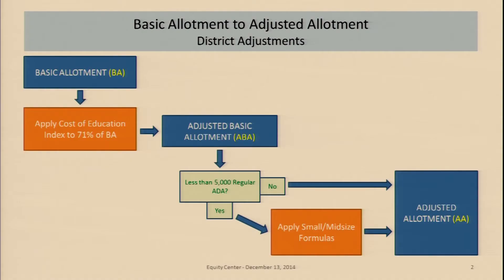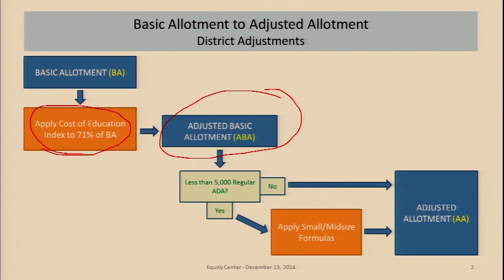Just to refresh your memory: you start with the basic allotment, then you go to the cost of education index, which is applied to 71% of your basic allotment, taking into consideration things like the cost of hiring salaries for teachers, because you have to pay more when the cost of living is higher. So it reflects that and applies to 71% of the basic allotment. When you get through with that process, you have the adjusted basic allotment, or ABA.